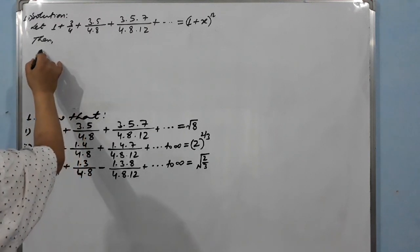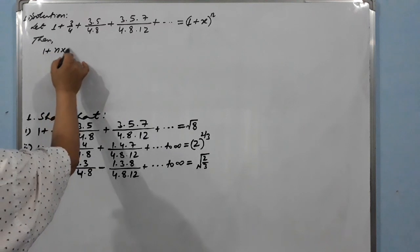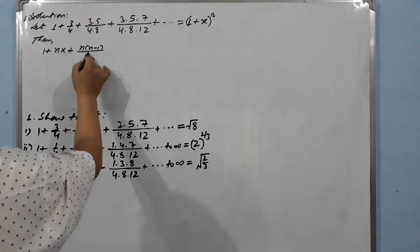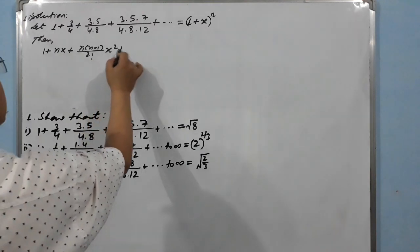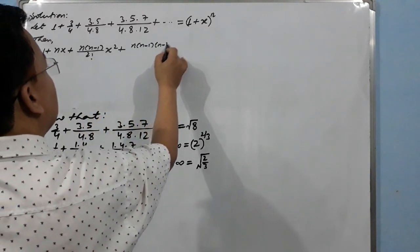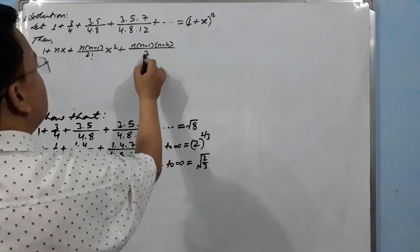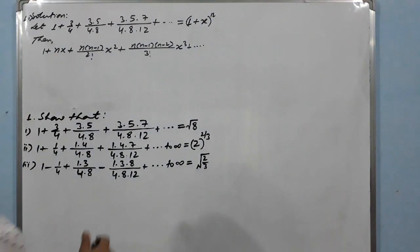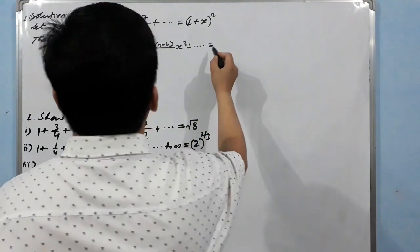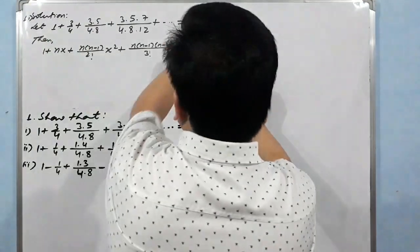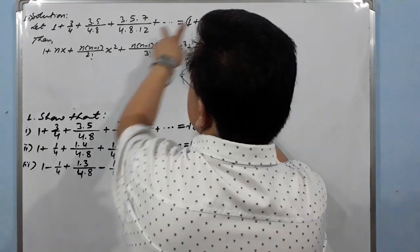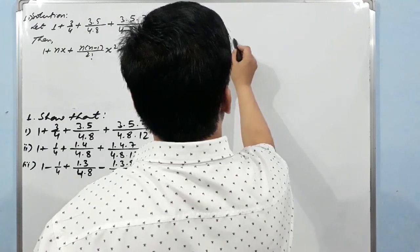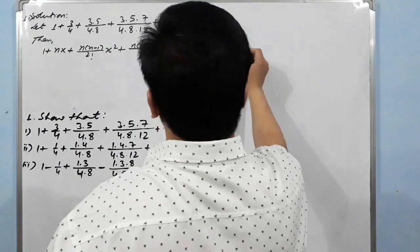Expanding (1 + x)^n using the binomial series gives: 1 + nx + n(n−1)/2! · x² + n(n−1)(n−2)/3! · x³ + ... to infinity, which we set equal to 1 + 3/4 + (3·5)/(4·8) + (3·5·7)/(4·8·12) + ...